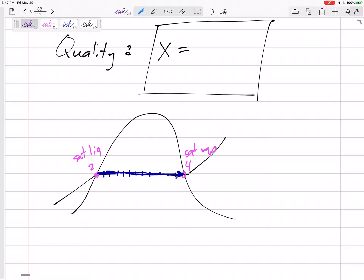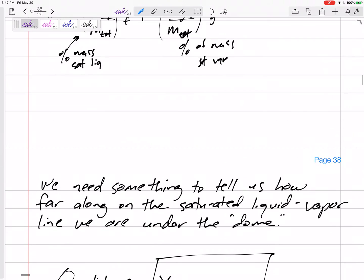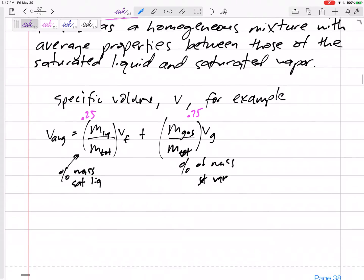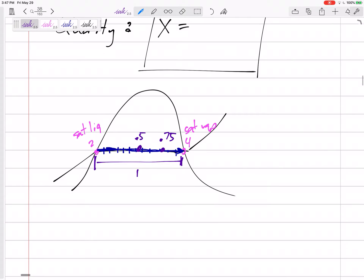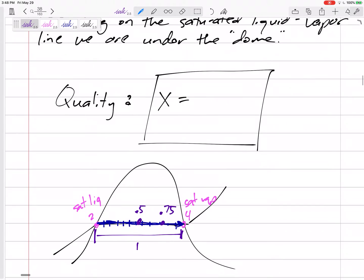If this whole thing is one, then are we halfway at a quality of 0.5? That last example, we were at a quality of 0.75. 75% of the mass is now vapor, whereas only 25% of the mass is liquid. And so quality is how far along are we. Quality X is mass of the vapor over mass total. Quality is mass vapor over mass total. It's not mass vapor over mass liquid. It's not mass liquid over mass total. It is how much vapor do we have? Mass vapor over mass total.